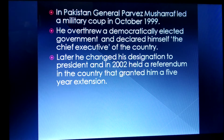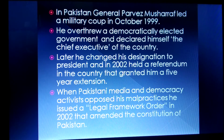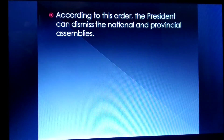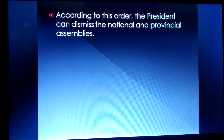In 2002, he passed a referendum and legal order where he himself granted permission for General Pervez Musharraf to be president of Pakistan for the next five years. Because he was engaging in malpractices, he was opposed by the Pakistani media and democracy activists. When they opposed him, he passed a Legal Framework Order, according to which the president could dismiss the national and provincial assemblies — giving all powers to Musharraf.